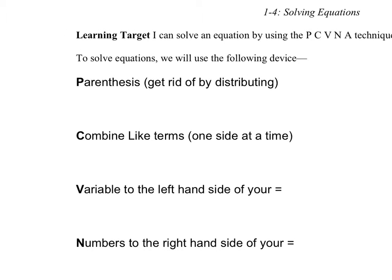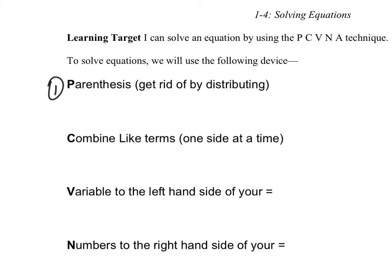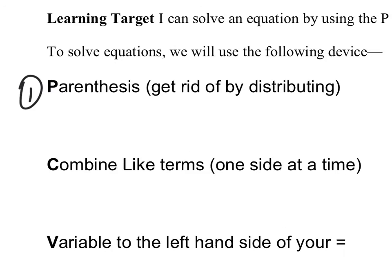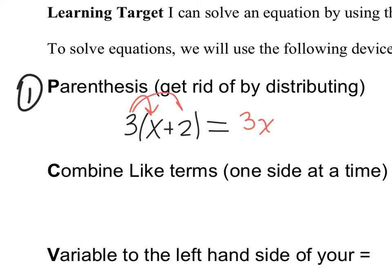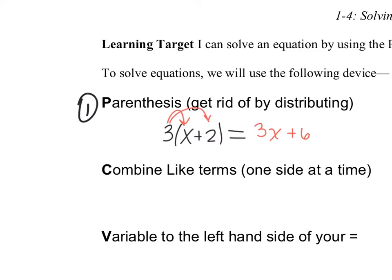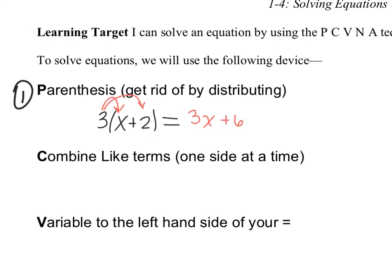Step one is the parentheses. What we want to do is make sure that we can get rid of our parentheses by distributing. So, for instance, if I have 3(x plus 2), I can distribute that to be 3 times x, which is 3x, and 3 times 2, which is a positive 6. That's what we mean by get rid of your parentheses by distributing.